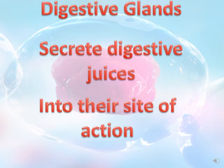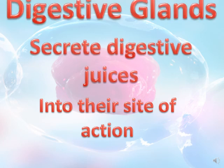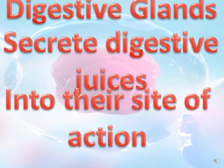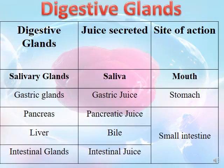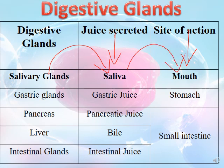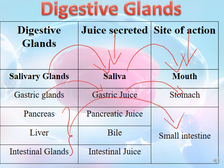What is the function of digestive glands? Digestive glands secrete digestive juices into their site of action. Salivary glands secrete saliva inside the mouth. Gastric glands secrete gastric juice in the stomach. Three glands secrete their juices into the small intestine: the pancreas secretes pancreatic juice, the liver secretes bile, and intestinal glands secrete intestinal juice.